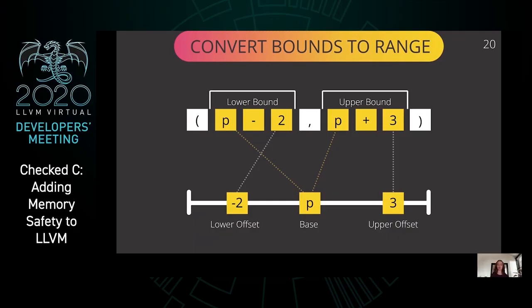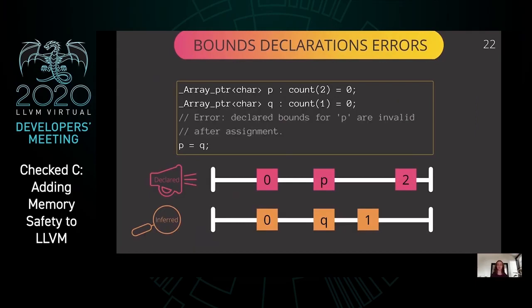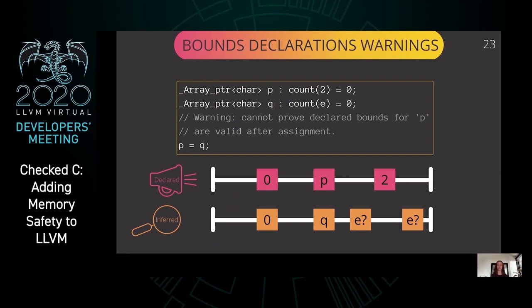Once the compiler has inferred bounds for a pointer P, the declared and inferred bounds are both converted to ranges. A range consists of a base expression, a lower offset, and an upper offset. For the inferred bounds to be valid, the bases of the inferred and declared ranges must be equal, and the inferred range must contain the declared range. If the inferred upper offset is below the declared upper offset, or the inferred lower offset is above the declared lower offset, the inferred bounds violate the declared bounds. If the compiler can prove the inferred bounds are invalid, this is a compile-time error. If it can neither prove nor disprove validity, this is a compile-time warning.